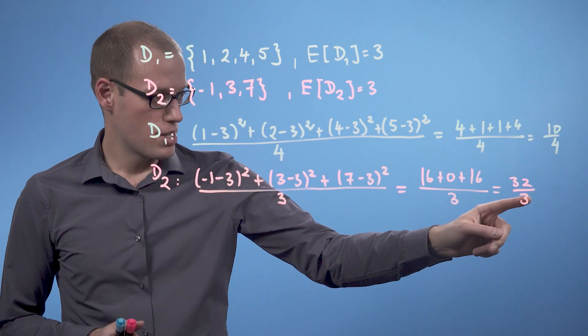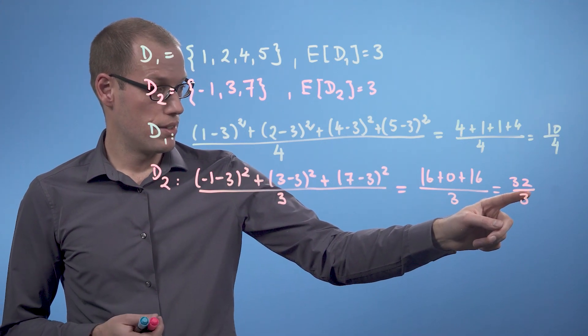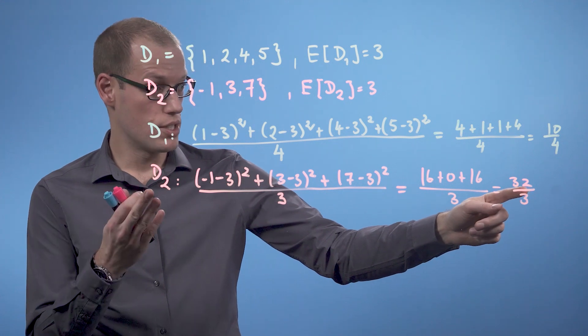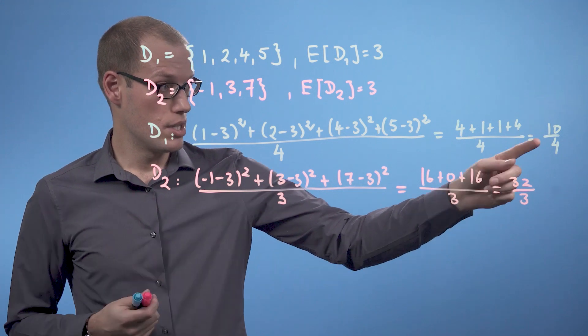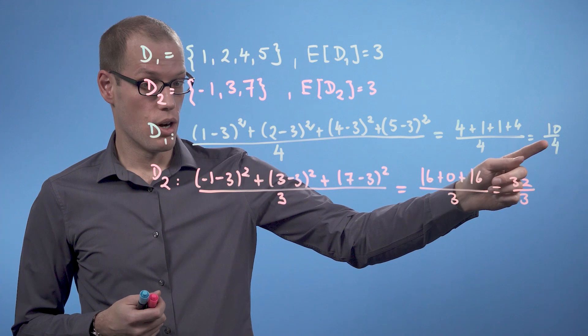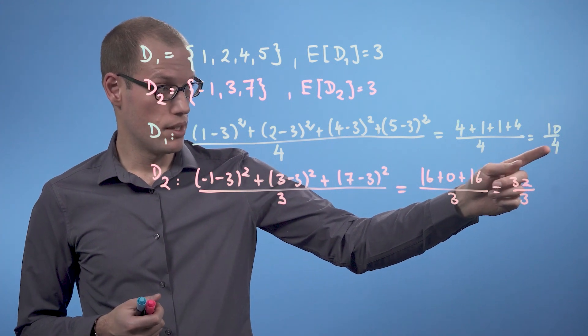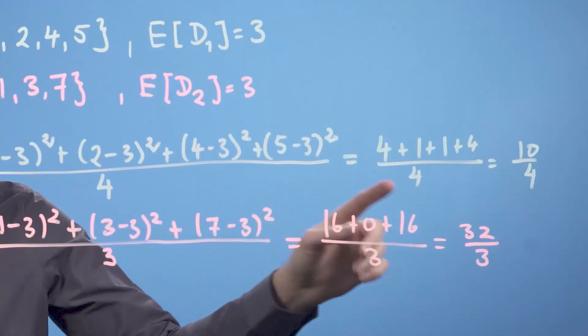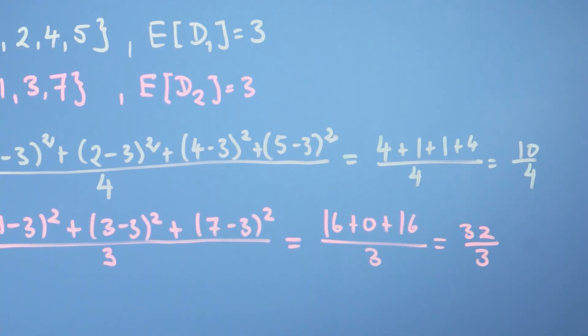So now this number is bigger than this number, which means that the average squared distance of D2 from the mean value is bigger than the average squared distance of D1 from the mean value, which indicates that the spread of the data is higher in D2 than in D1.